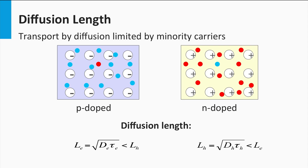Now consider an n-doped semiconductor material. The electrons (red dots) are the majority charge carriers and the holes (blue dots) are the minority charge carriers. Electrons have a small probability of meeting a hole, so the recombination rate for electrons is small. Holes, however, have a high probability of meeting an electron since the electron density is many orders of magnitude higher. This means the recombination rate for holes is high — the diffusion length of holes, L_h, is shorter than that of the electrons, L_e.